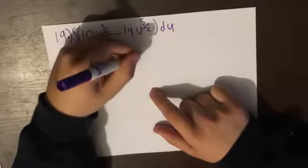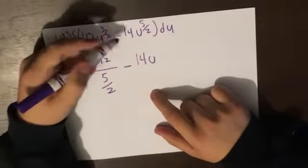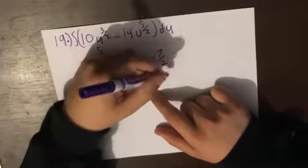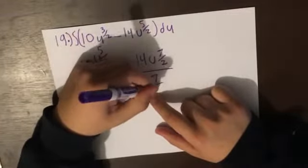Subtracting, we're going to have 14u. We're going to add 2 to the 5, which is going to be 7/2, over 7/2.